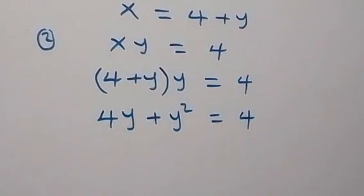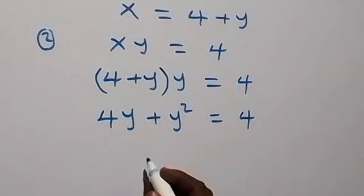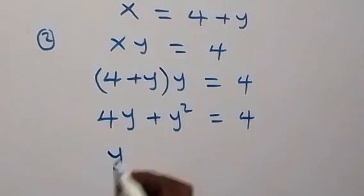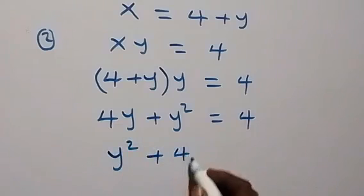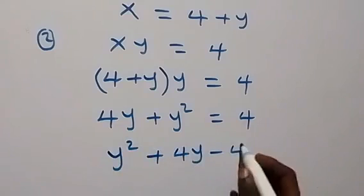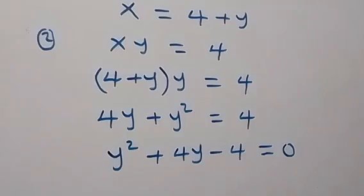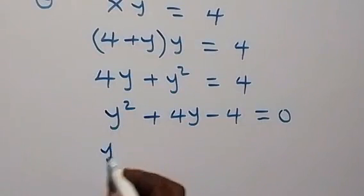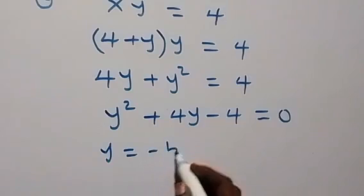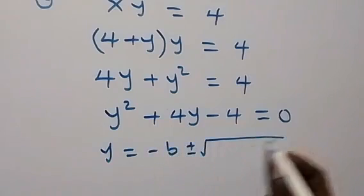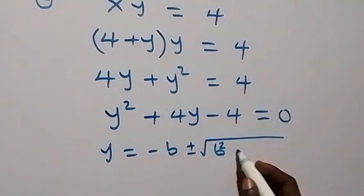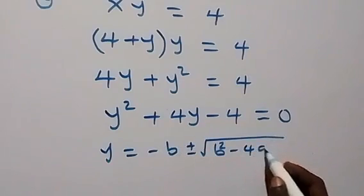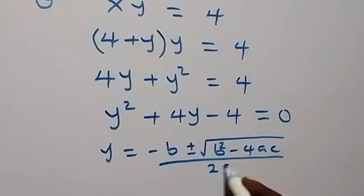Then here we can rearrange. This becomes y squared plus 4y minus 4 equals to 0. That is, here we have a quadratic equation that we can solve using the formula y equals to minus b plus or minus square root of b squared minus 4ac over 2a.